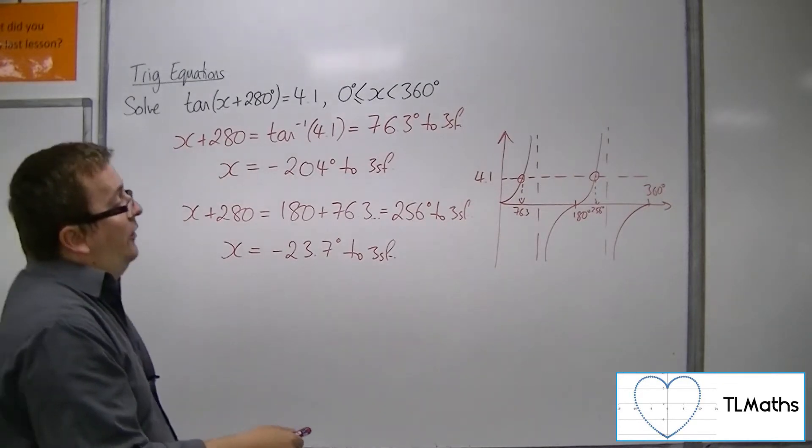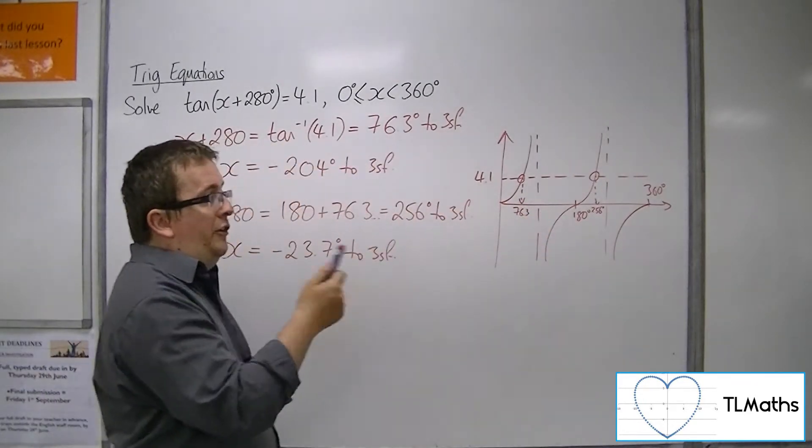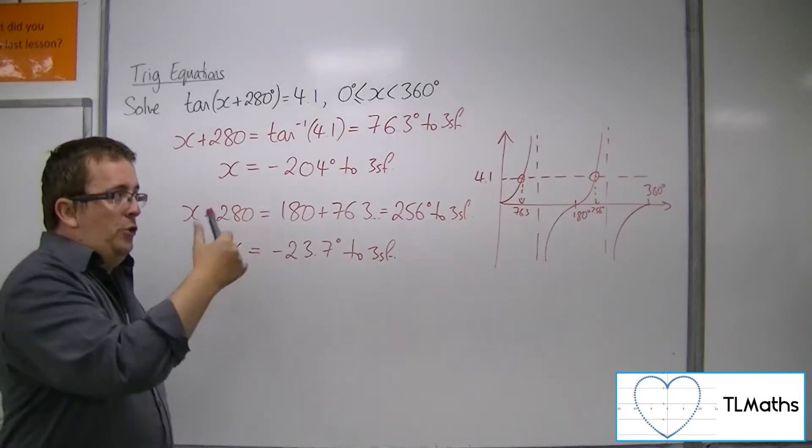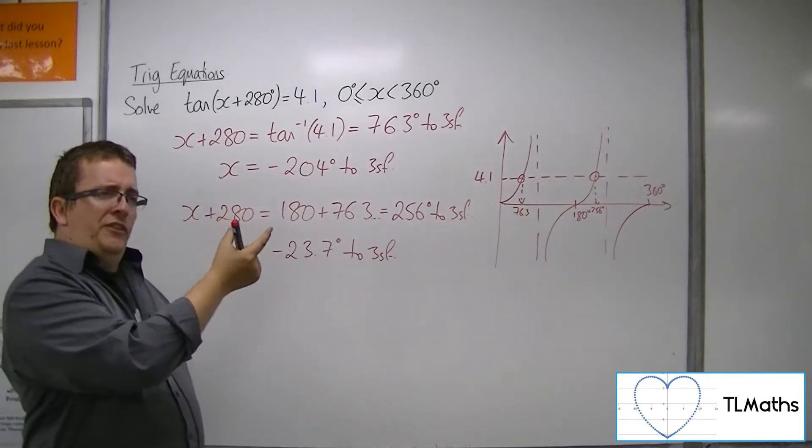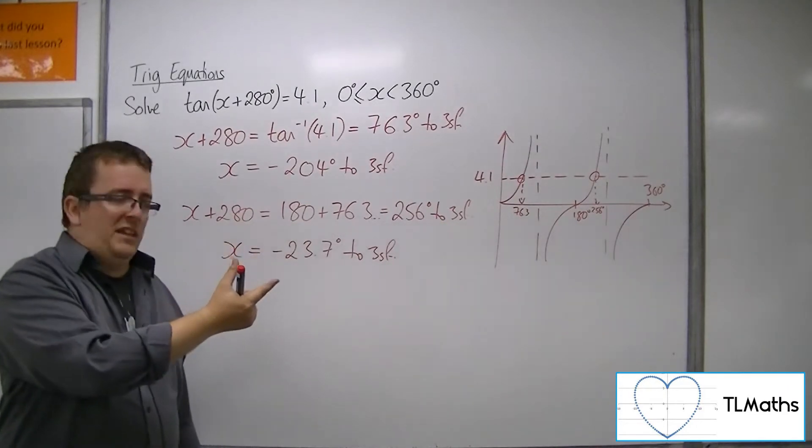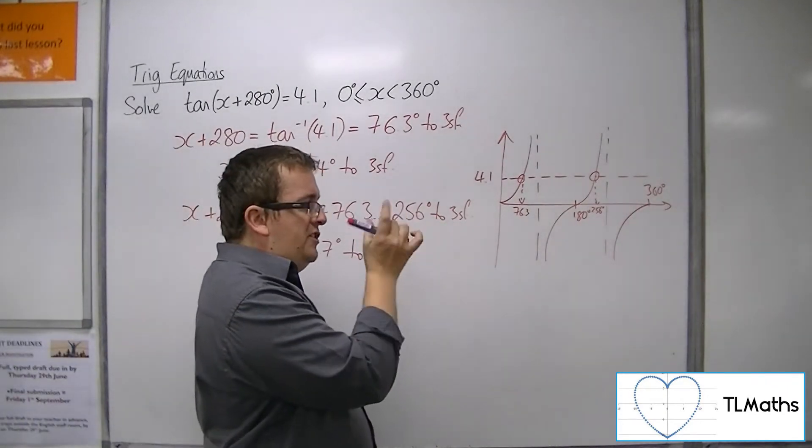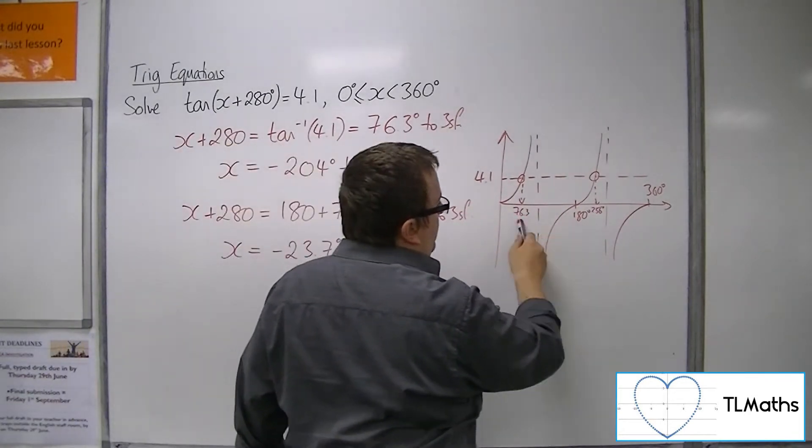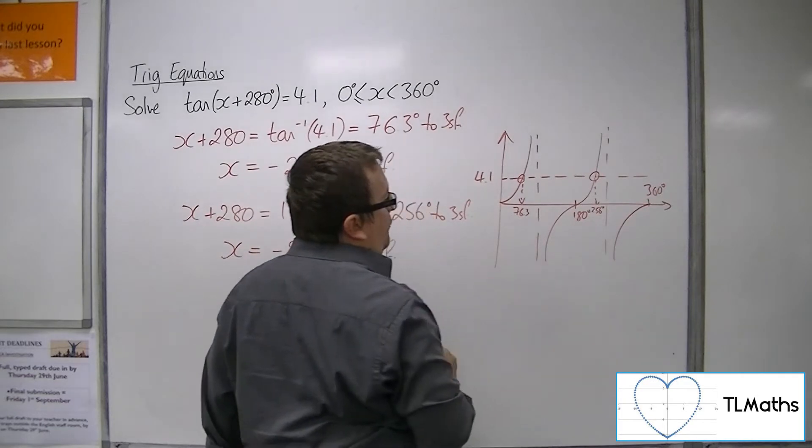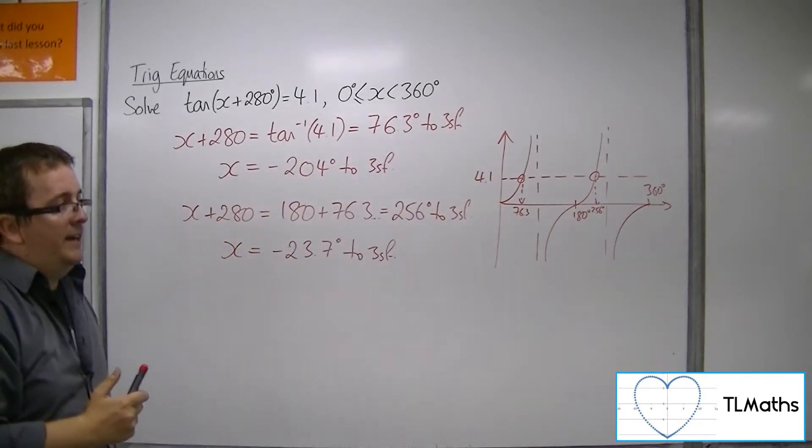That's because with tan, unlike sine and cos, there are not two kind of, I'd say distinct solutions, but distinct is the wrong word. There are kind of two solutions that are not interconnected. These ones, this one and this one, they are 180 degrees from each other, and they always are, OK, for tan.